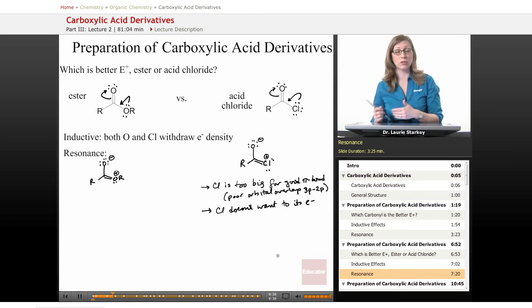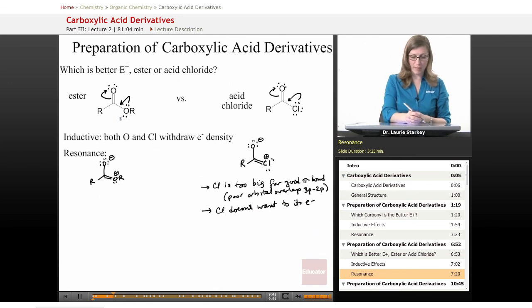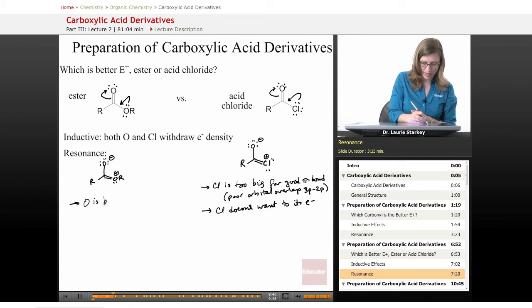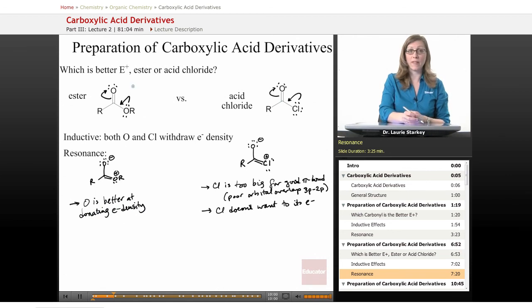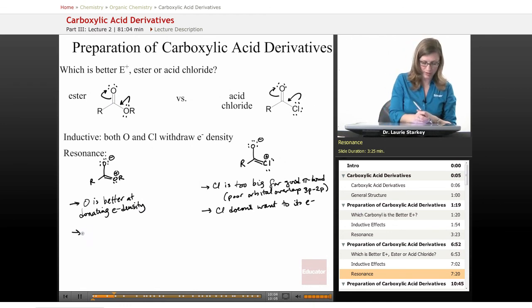And so oxygen now compared to chlorine, oxygen is actually better at donating its electron density because it's matched better with the carbon size. So what does that do to the ester carbonyl compared to the acid chloride carbonyl? The ester carbonyl is now the one that is more electron rich because it has more of this electron donation.